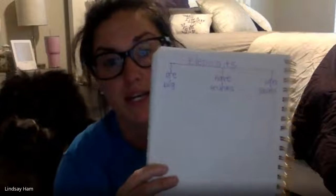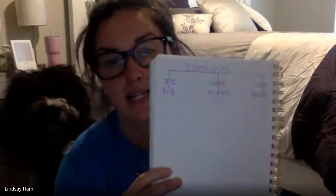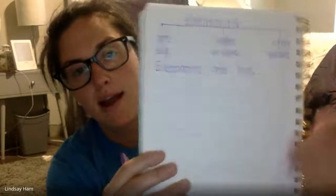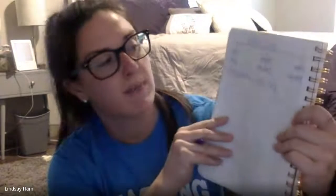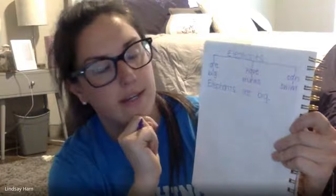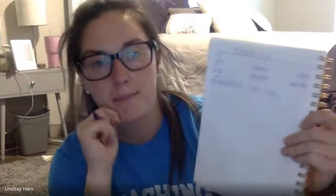So I came up with three different parts of my tree map, and now I can write these three things as my sentences on the lines below. My first sentence would be: Elephants are big. Period. Elephants have trunks. Period. Elephants can swim. Period.